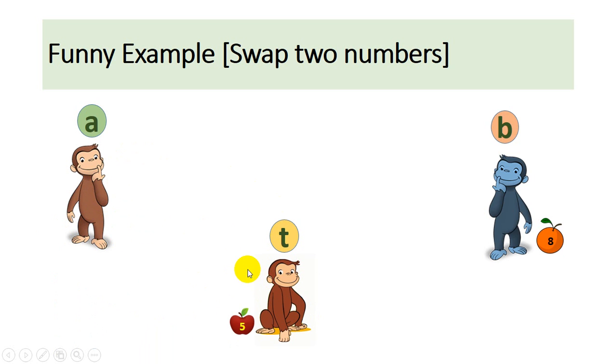Because b will trust t. Now this a will take this orange using a equal to b. So now this orange will go to a. Now there is one more step where this, this step, b is equal to t is the last step.